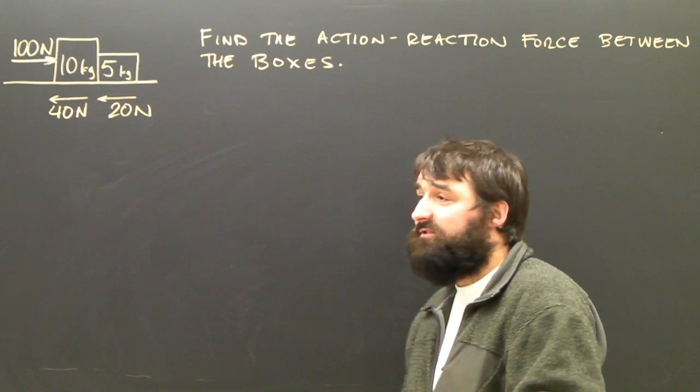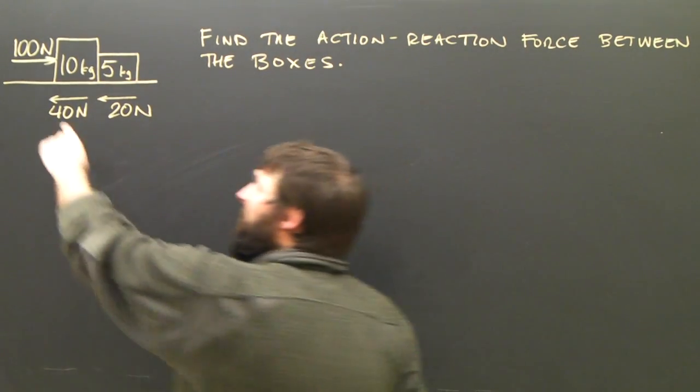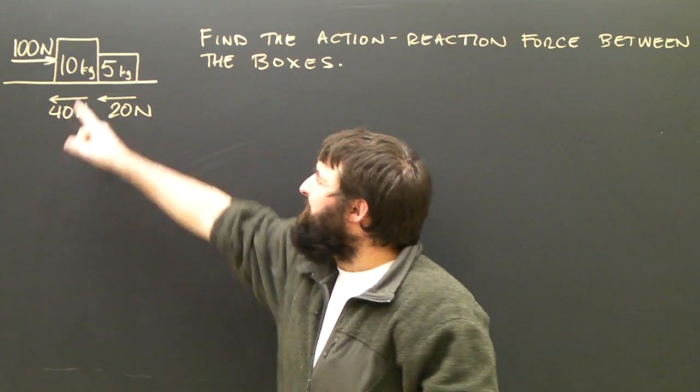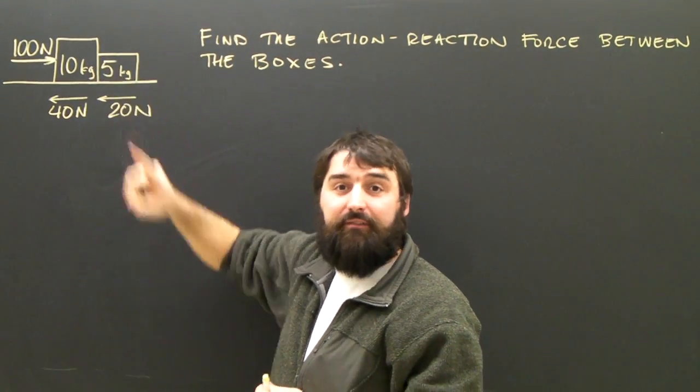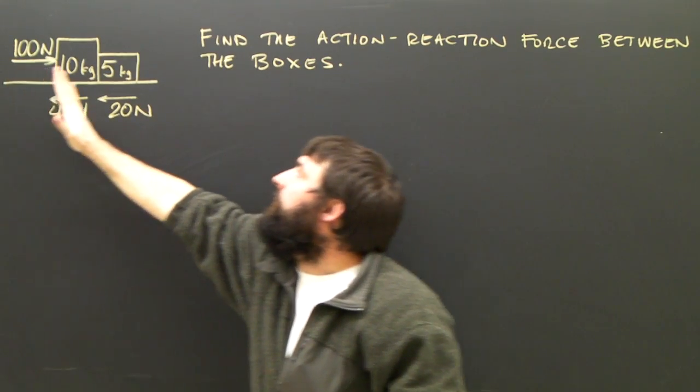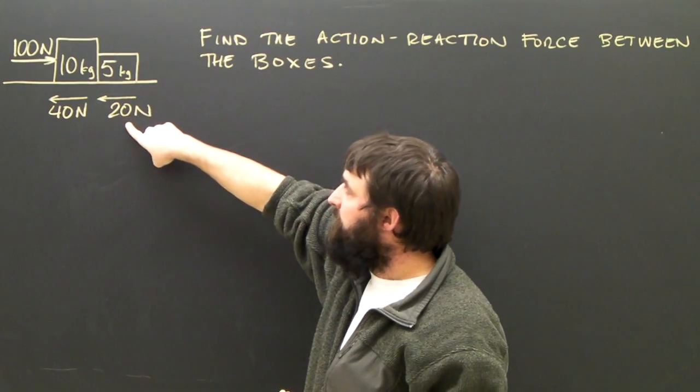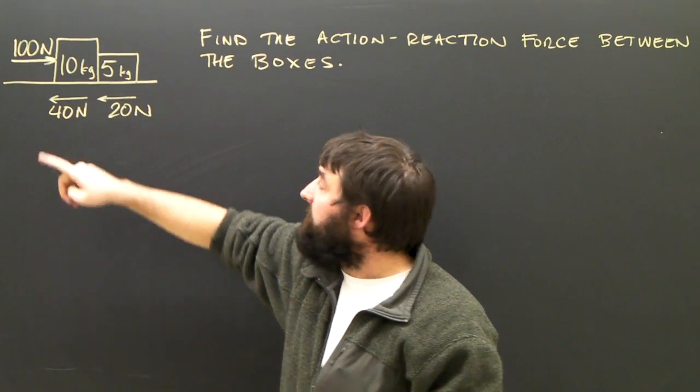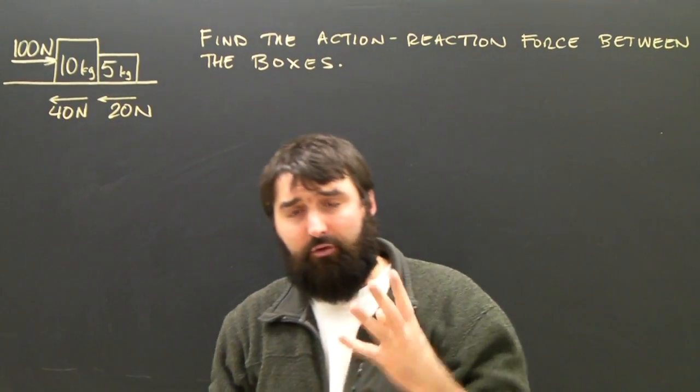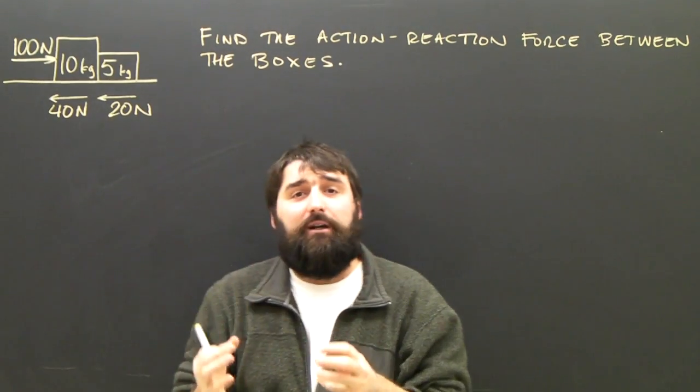Now we're going to do a question based on Newton's third law. As you can see in the diagram, a 100 Newton force is going to be applied to a 10 kilogram box, and that box is sitting up against a 5 kilogram box. So the 100 Newton force is going to push both boxes. The question is, what is the action-reaction force between the two boxes?